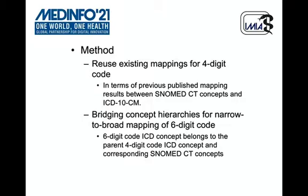Next, we can build narrow-to-broad mappings for the six-digit code by bridging through concept hierarchies. This means if the six-digit code has a parent four-digit code in the ICD-10CN concept, then it can be mapped to the corresponding SNOMED CT concept by transiting these relations.